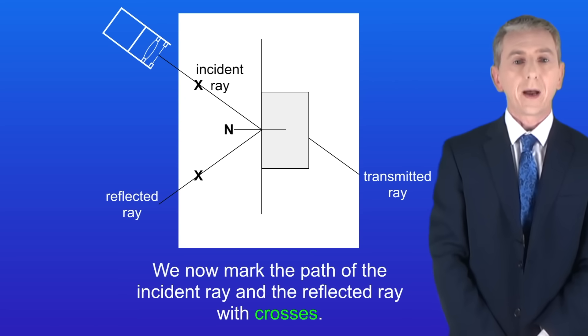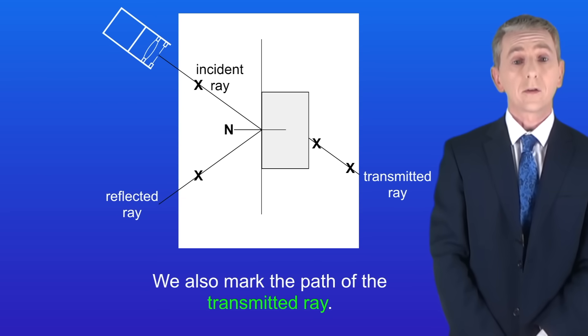We now mark the path of the incident ray and the reflected ray with crosses like this. We also mark the path of the transmitted ray like this.